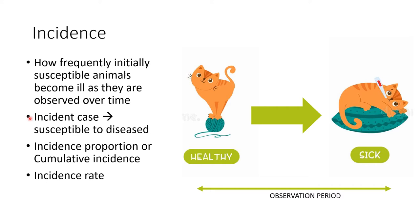So basically, incidence measures how frequently animals become sick over the observation period. An incident case is one where the disease status changes from being susceptible to becoming diseased — from healthy to sick as we observe it through time. When looking for incidence, there are two types of incidence measures: incidence proportion or cumulative incidence (incidence risk) and incidence rate.